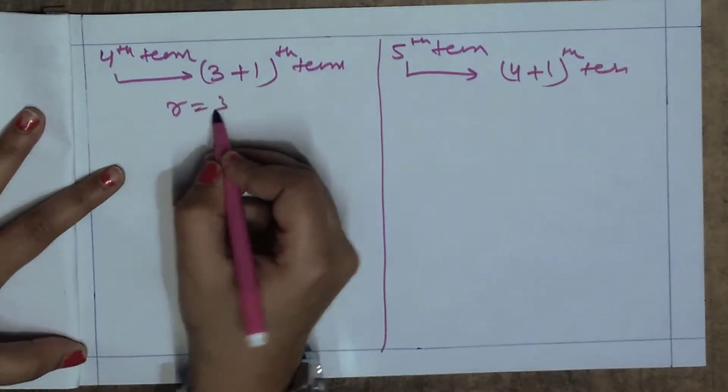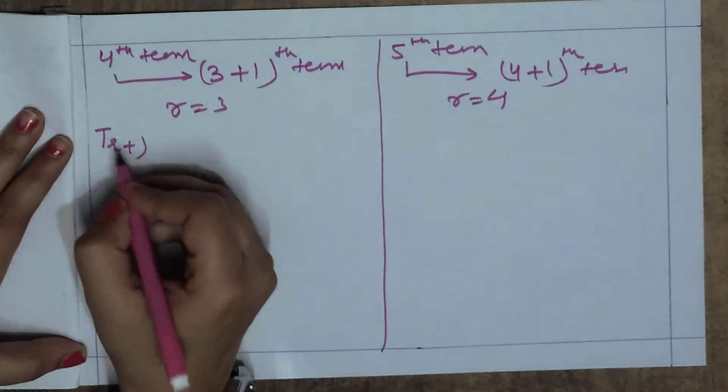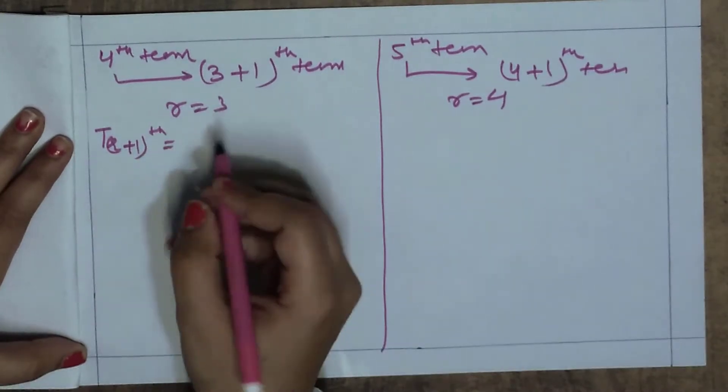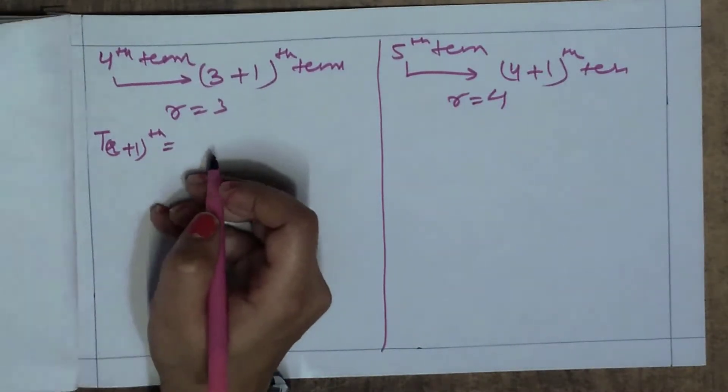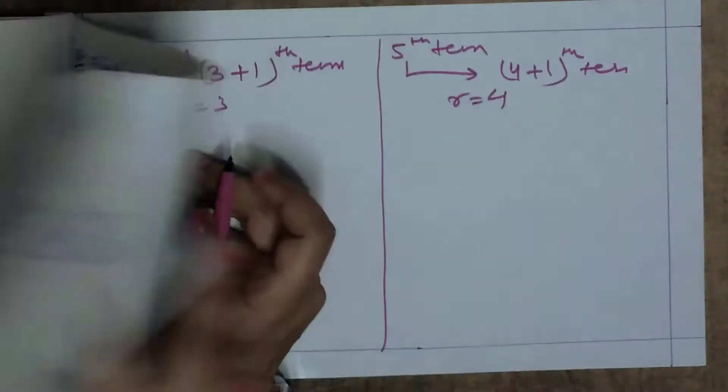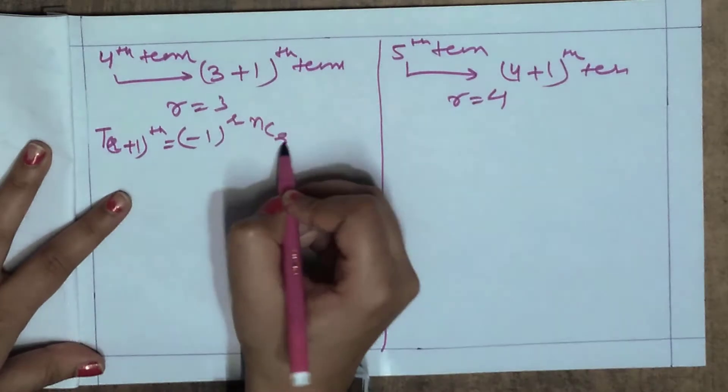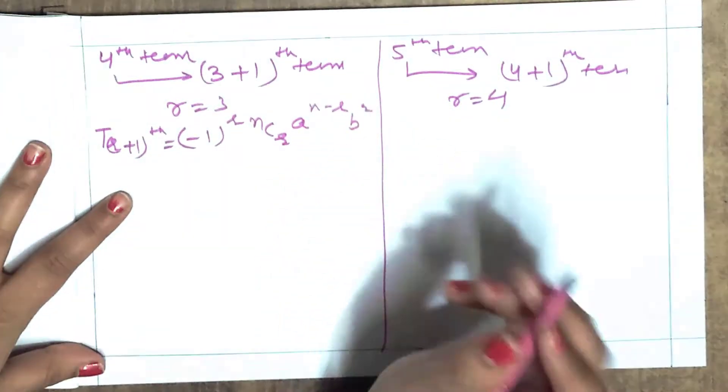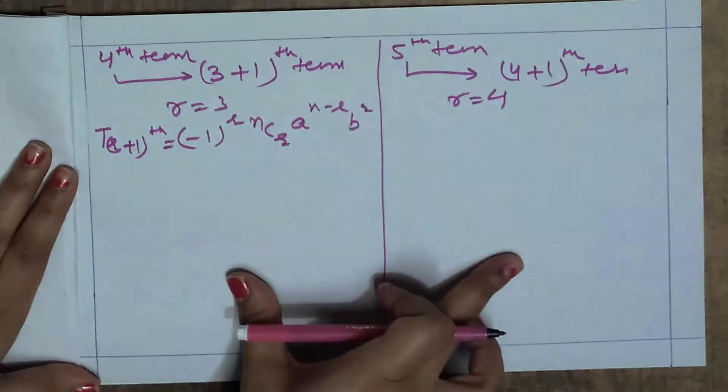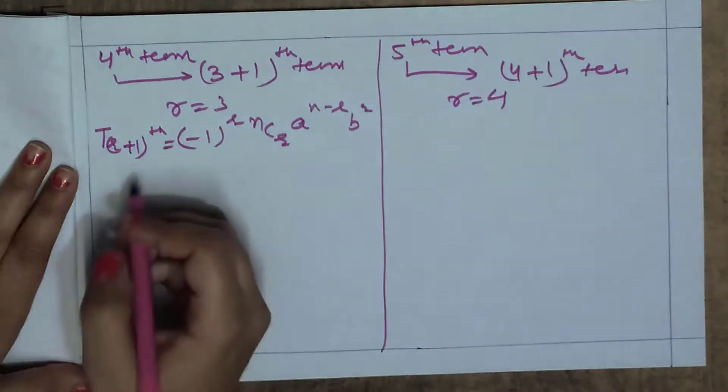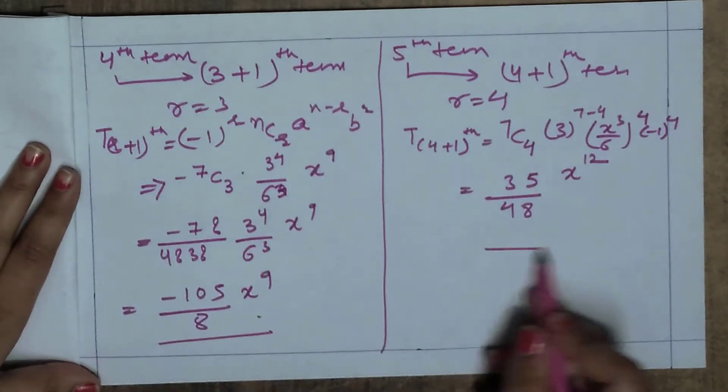Your r values: here r is 3, here r is 4. Normal formula. You have to check the expansion - positive or negative. Here minus 1 to the power r, nCr.